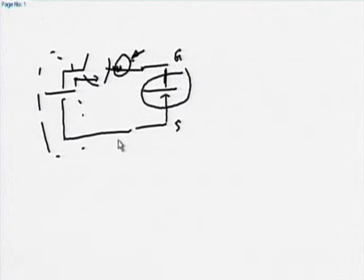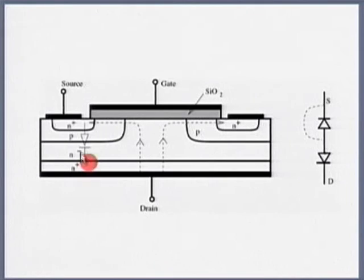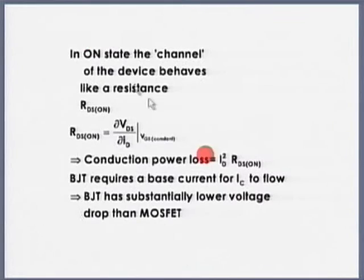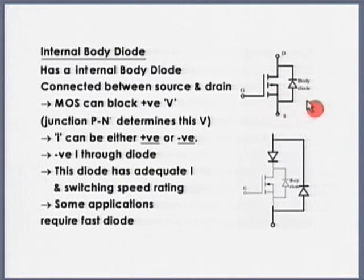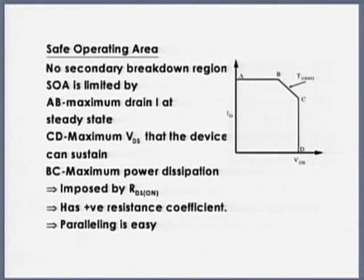If you see the MOSFET structure, there is an inherent body diode between drain and source. Generally an external body diode is incorporated during fabrication because the body diode's speed may not match the MOSFET. MOSFET is a majority carrier device, so it has a positive resistance coefficient — as temperature increases, resistance increases. Therefore paralleling is easy compared to BJT. BJT paralleling is difficult because it is a minority carrier device with a negative resistance coefficient.